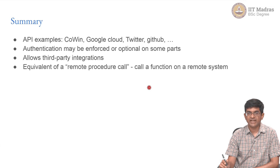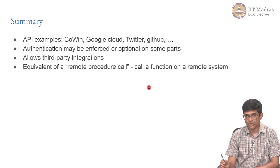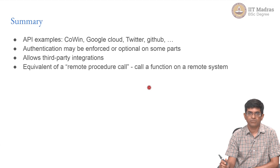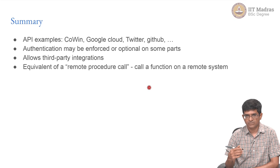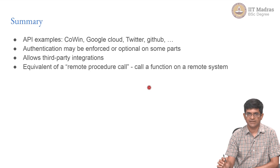To summarize: there are many different API examples — CoWIN, Twitter, GitHub, Google Cloud. Authentication may be enforced in certain cases or optional on some parts. The main reason for having APIs is that they allow various kinds of third-party integrations. You can write your own app that communicates using this API, effectively triggering a remote function call on another device. By targeting the appropriate endpoint you are able to trigger some kind of behavior at the other end.